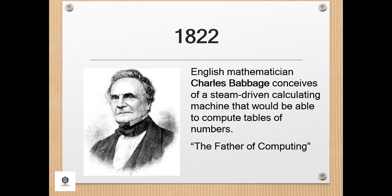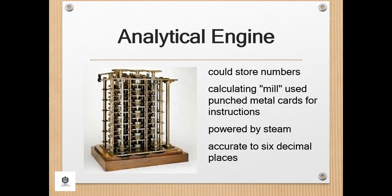During 1822, English mathematician Charles Babbage conceived of a steam-driven calculating machine that would be able to compute tables of numbers. The project, funded by the English government, was a failure. More than a century later, however, the world's first computer was actually built based on his ideas, earning him the title of father of computing. His analytical engine could store numbers, use punch metal cards for instructions, was powered by steam, and was accurate to six decimal places.